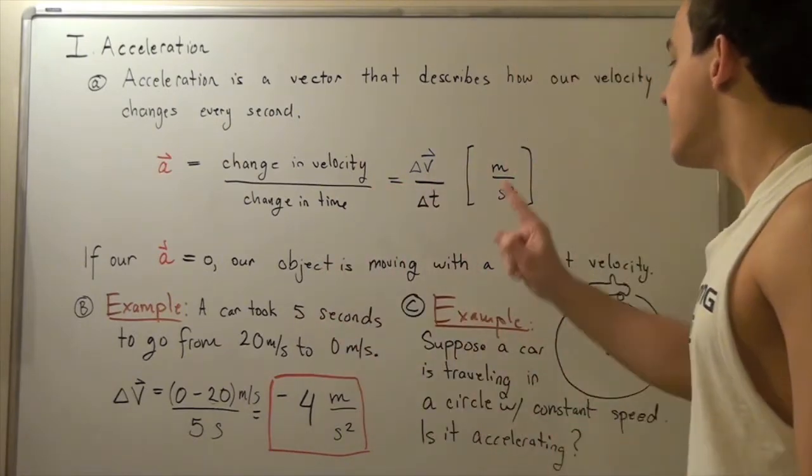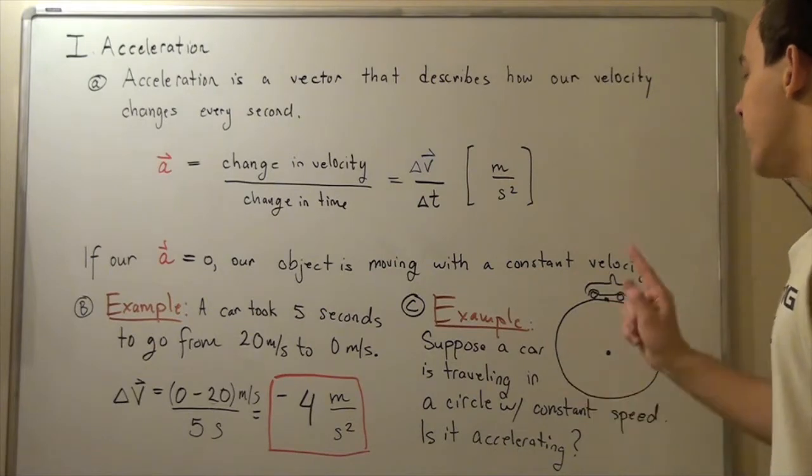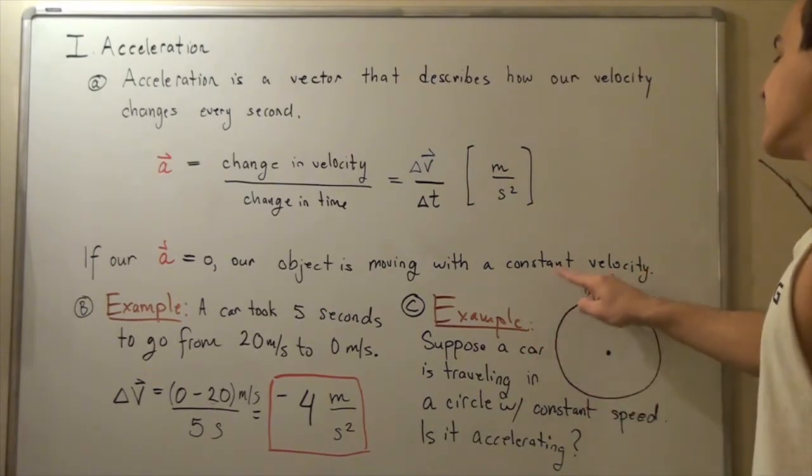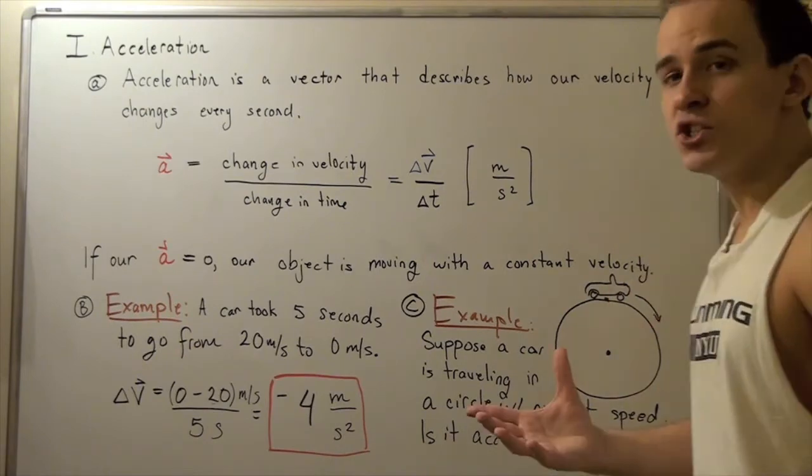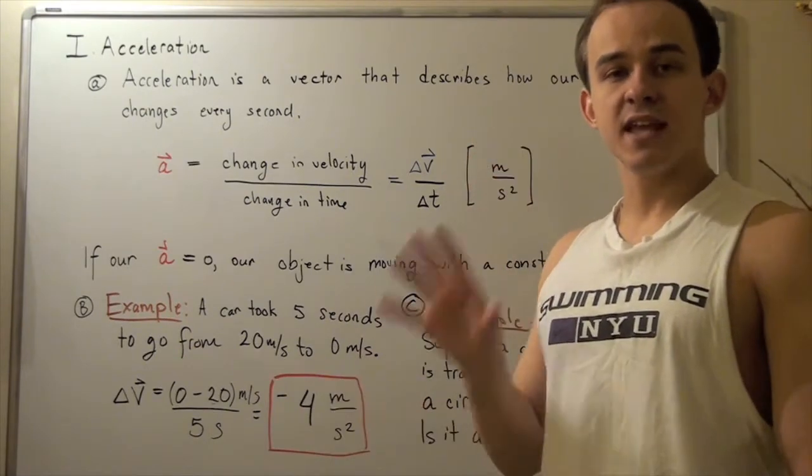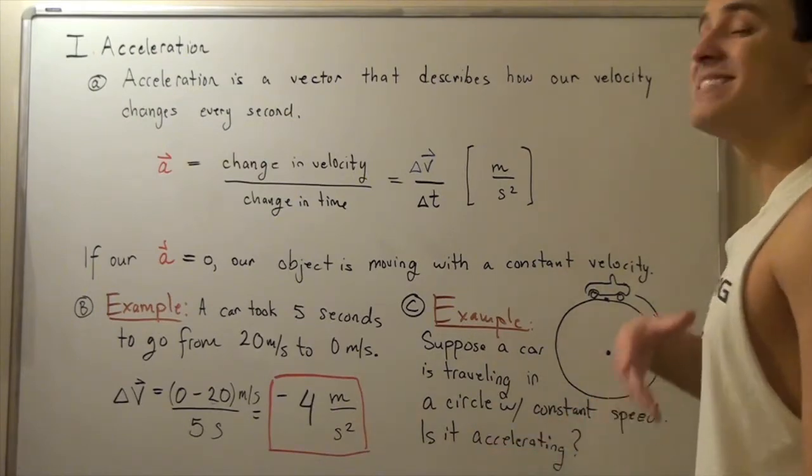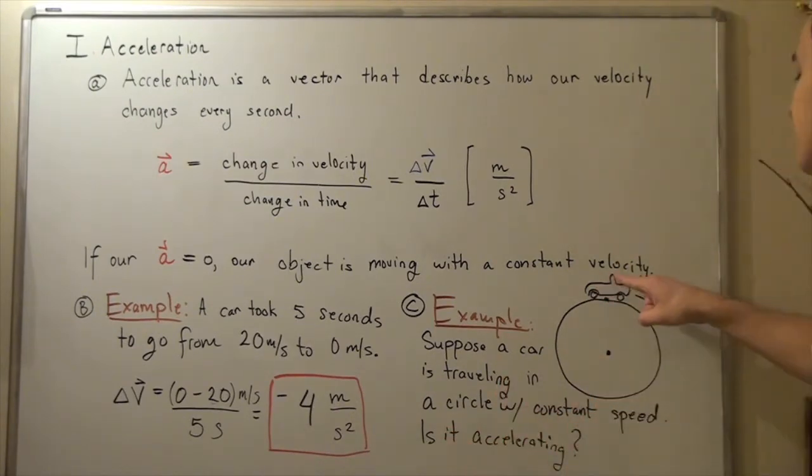Let's look at example two. Suppose we have a car traveling in a circular path with a constant speed, so the magnitude of velocity stays the same. My question is: Is our car accelerating when it's traveling in this circle?